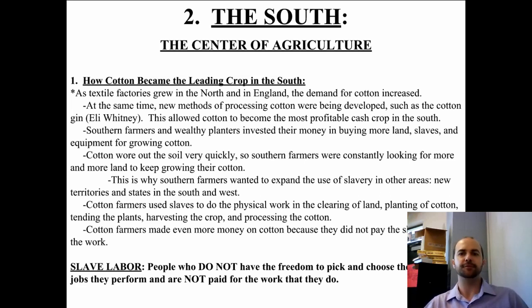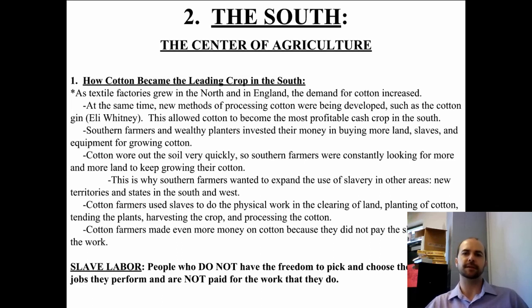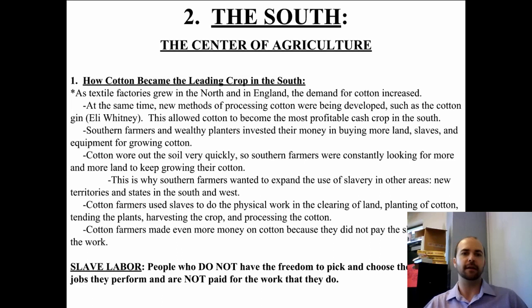The cotton gin allowed cotton to become the most profitable cash crop in the South. There were four cash crops: tobacco, cotton, indigo, and rice, and cotton quickly became the most profitable. Southern farmers and wealthy planters invested their money in buying a lot of land, slaves, and equipment for growing cotton.